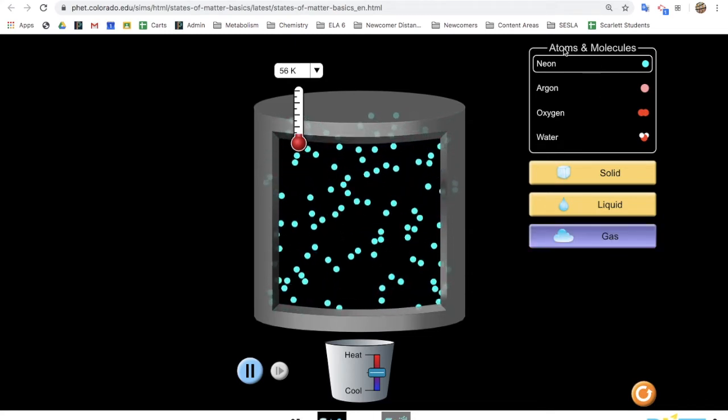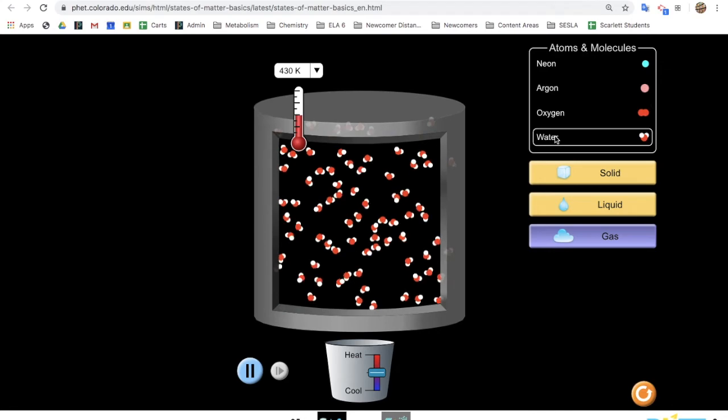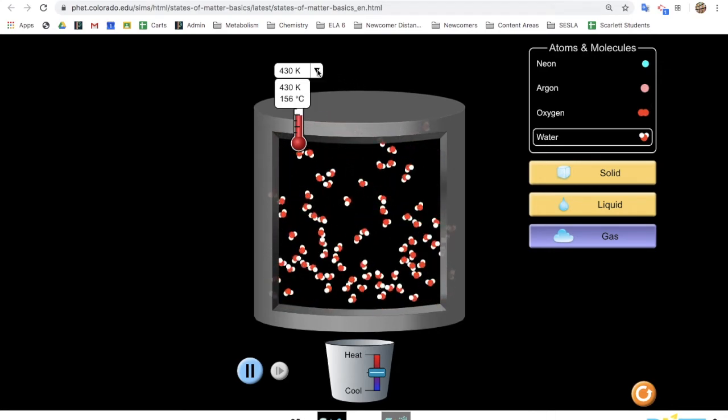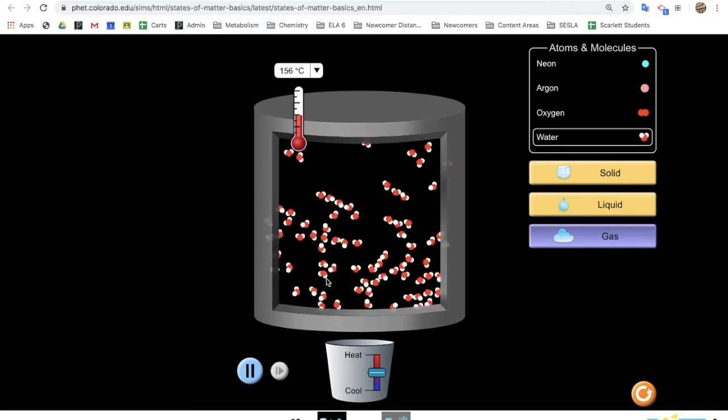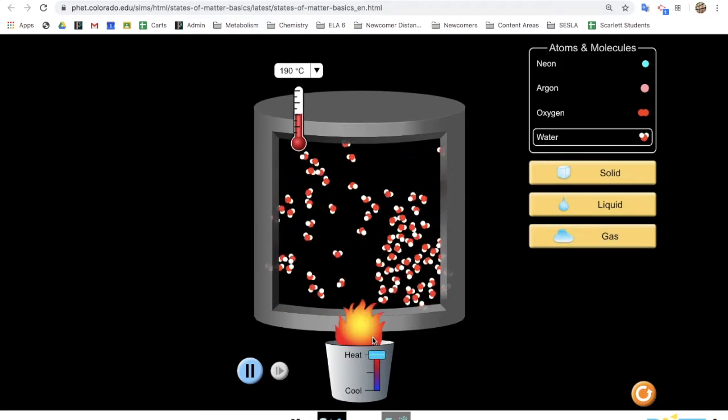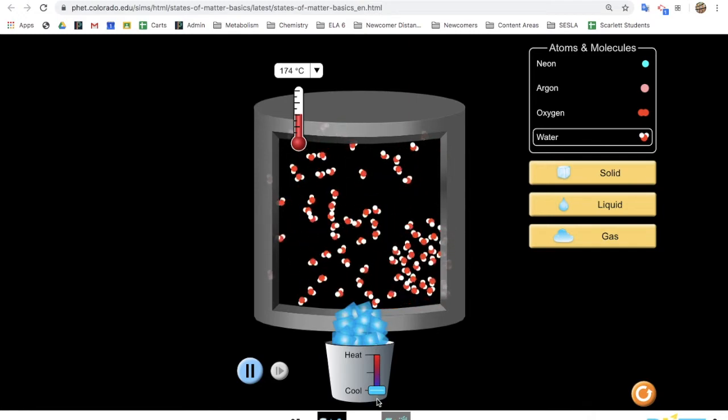Remember, you can change the type of atoms and molecules here. You can read the temperature here. And if you click, you see in degrees Celsius. And you can heat by holding this, or cool by holding this.